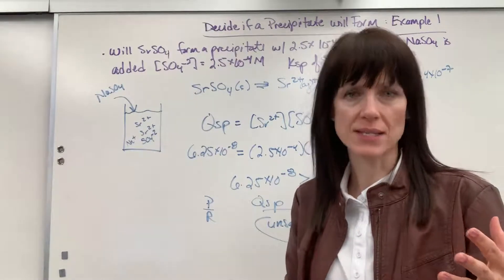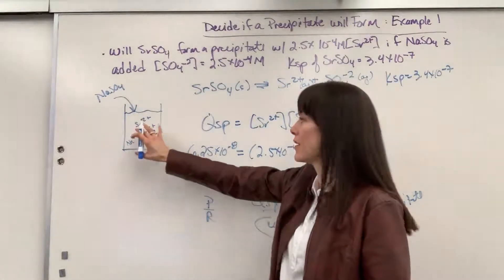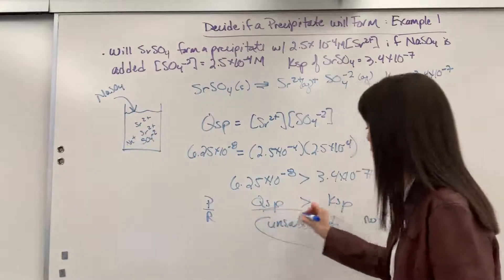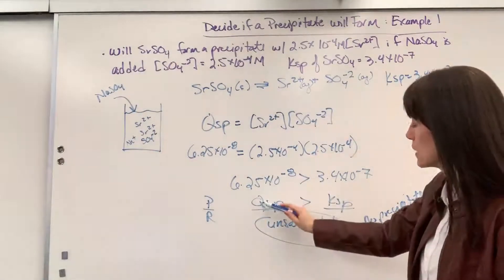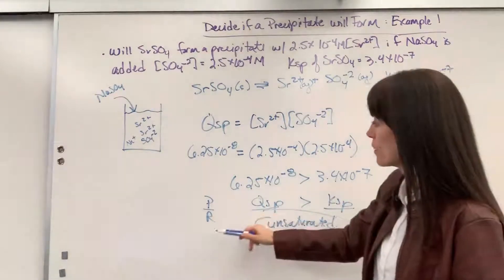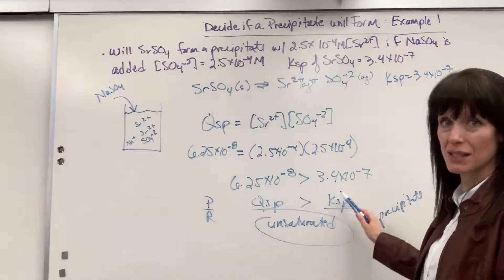So, different ways that they could ask that question. It all revolves around, at this moment, how does this solution compare to, so Qsp, how does it compare to Ksp? In this case, because Qsp is less than Ksp, we have fewer products than what we need to reach saturated equilibrium.